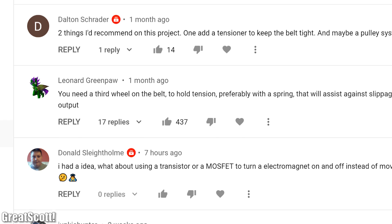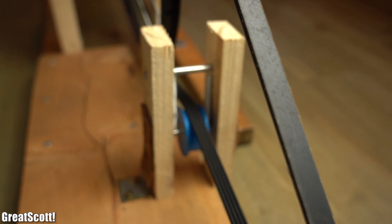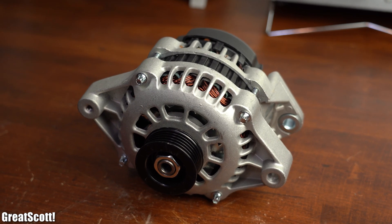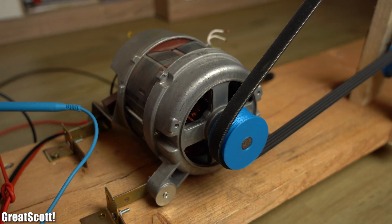In this video I will show you exactly how I improved my system, which includes making a spring-loaded belt tensioner, trying out a different alternator, and also a washing machine motor. Let's get started.